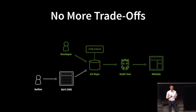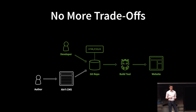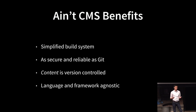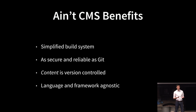We just saw how an author can edit a static website without running a single command, and just as importantly, this didn't require any changes to web developers' ideal static site workflows — no extra components like databases or application code. To summarize: it makes it easy for authors to edit static sites by making them look like web developers. This results in simplified build systems for developers, and it's as secure and reliable as Git itself, since all code and content is managed entirely by Git. Since content is version controlled, there's no risk of content disappearing or being overwritten in a database. And Ain't CMS is language-, framework-, and vendor-agnostic, since all it's really doing is moving text files around with Git.